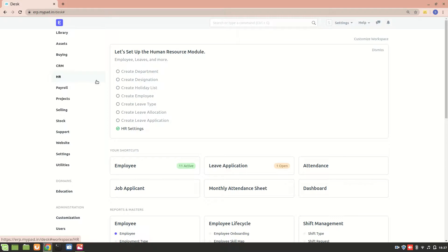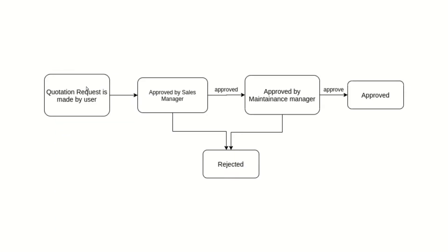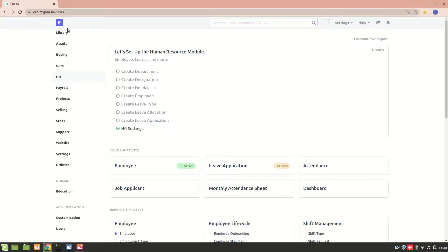We'll create a whole new workflow to understand it better. I made this flowchart as an example: once a quotation is created by a user, the next stage is that the quotation has to be approved by the sales manager — it can be approved or rejected. If approved, the next stage is approval by the maintenance manager, and finally it reaches the approved state.